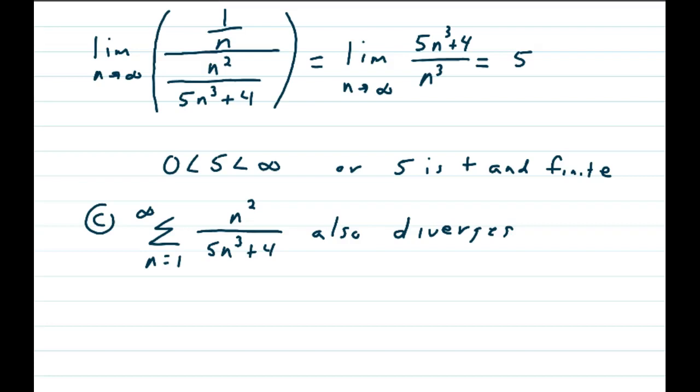And we know that 0 is less than 5 is less than infinity, or in words, 5 is positive and finite, which means that the series n squared over 5n cubed plus 4 diverges just like 1 over n does.